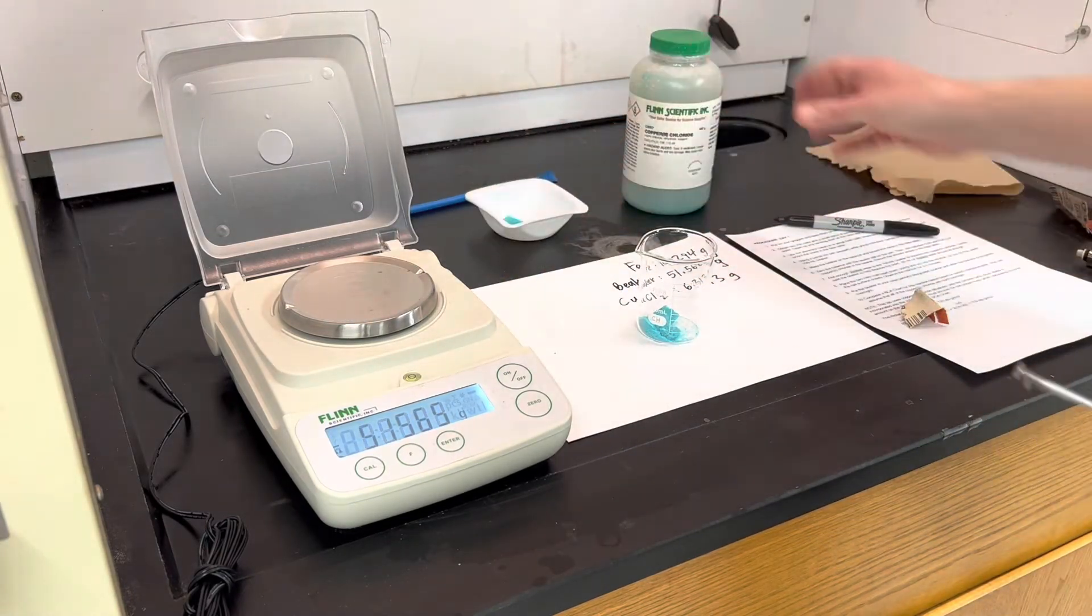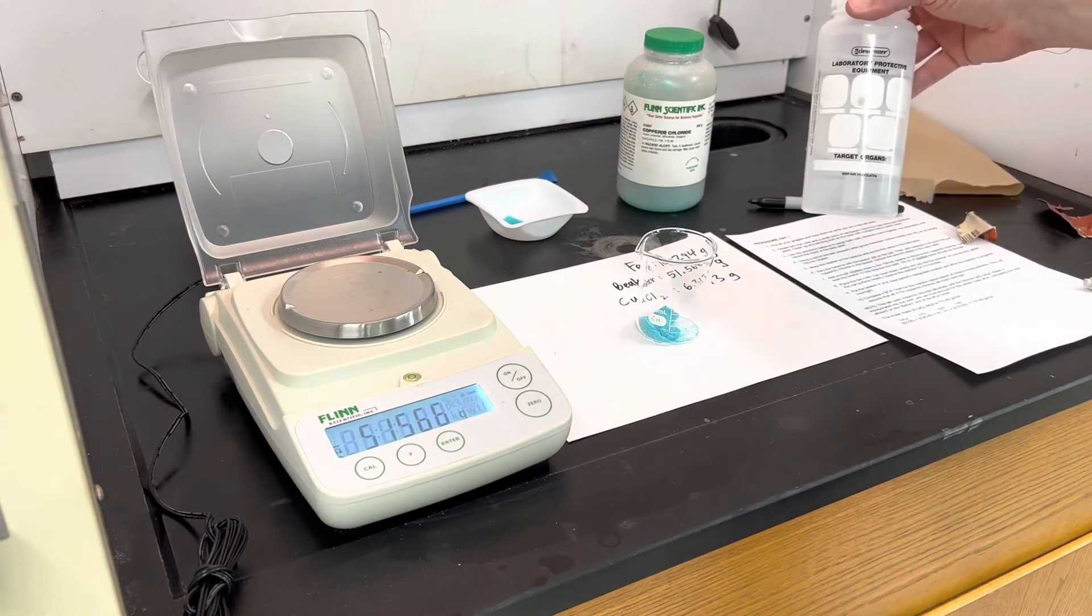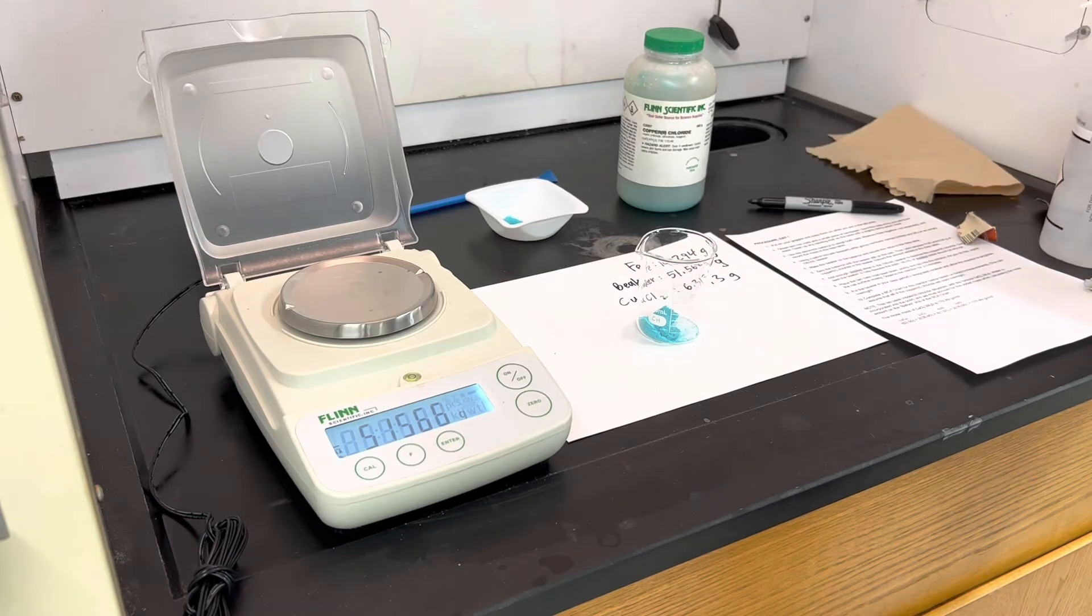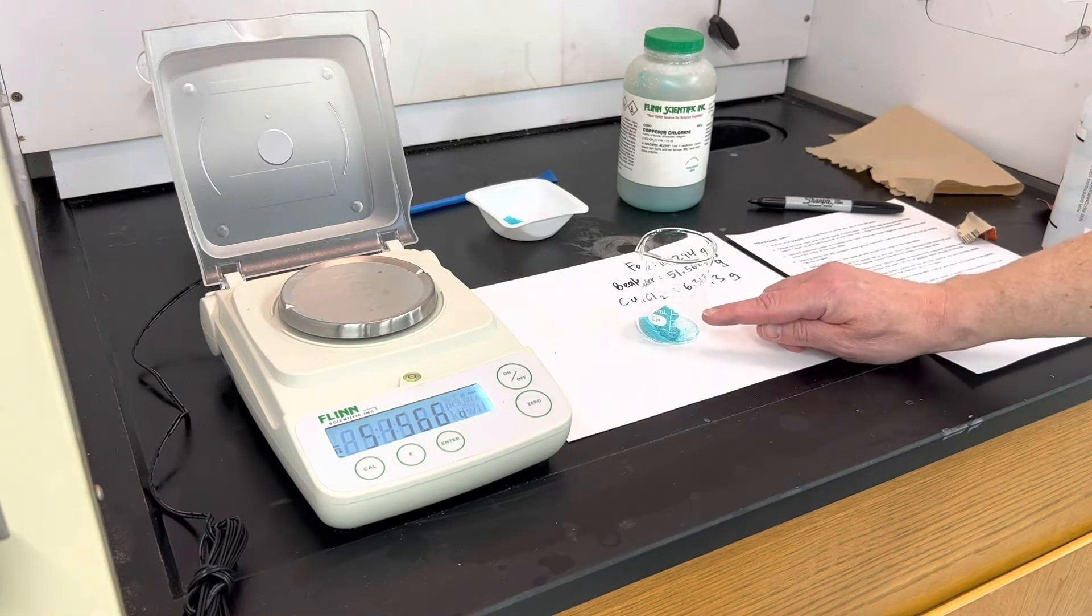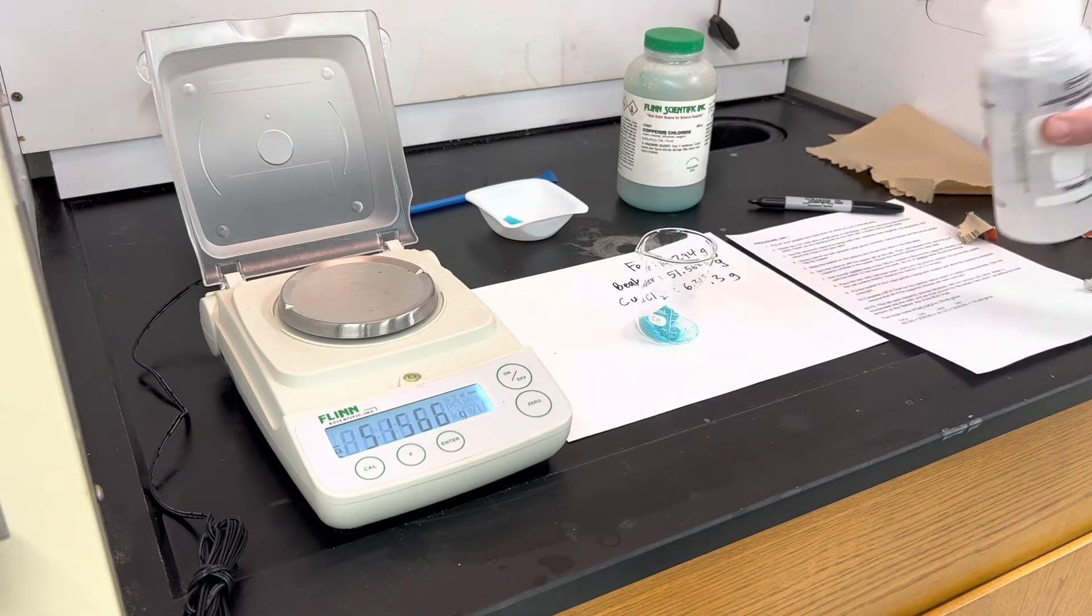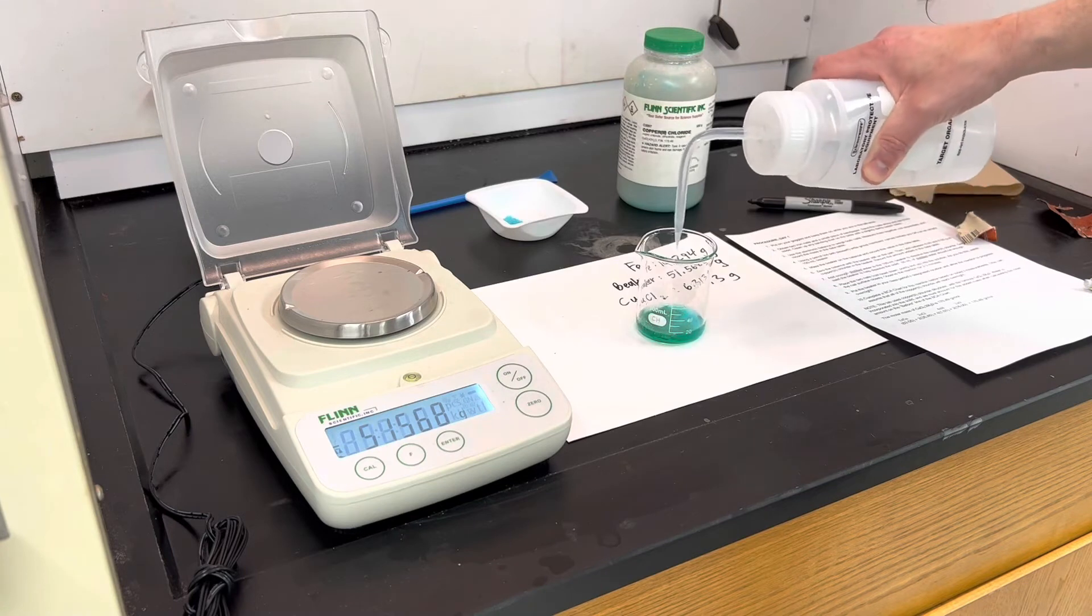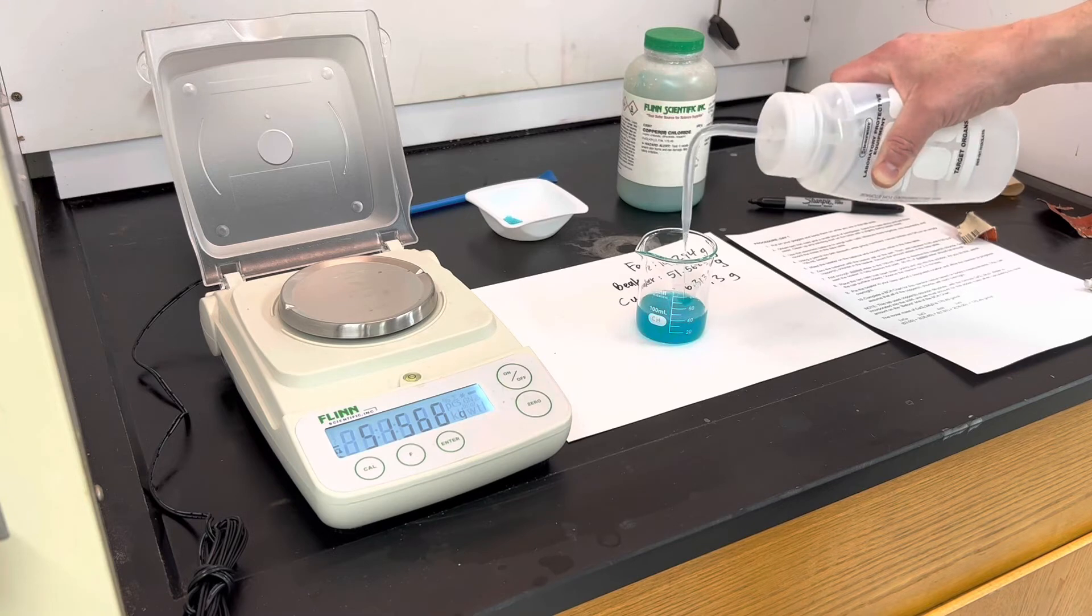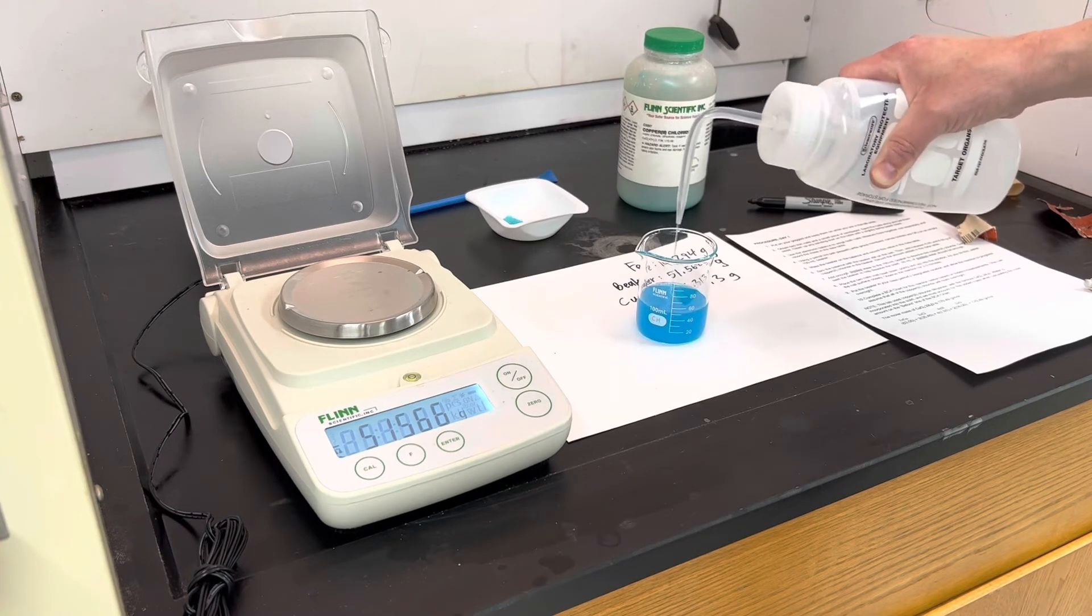So next I want to prepare a solution of copper chloride. It says add enough distilled water, so you'll have distilled water in a rinse bottle to dissolve the copper chloride. It suggests about 60 milliliters. And on this particular beaker it is marked. I don't need to be exact, but around 60 milliliters will be a good amount. So I'm trying to dissolve the copper chloride, and you get a nice bright blue solution.